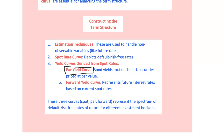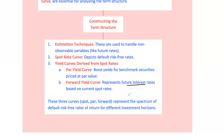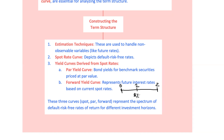The par yield curve represents the yield to maturity for bonds priced at par value, or face value — like comparing bonds that are perfectly priced, neither above nor below their face value. The forward yield curve shows expected future interest rates derived from current spot rates. It's like the crystal ball of finance, giving you insight into what the market thinks rates will be in the future. For example, if the current one-year spot rate is 2% and the two-year spot rate is 3%, the one-year forward rate starting a year from now can be derived from these spot rates, telling investors what they might earn by rolling over short-term bonds instead of locking into a longer-term bond today.